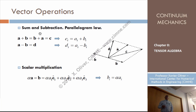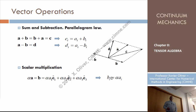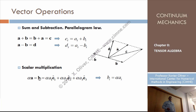Another operation that we can do is, given a vector, multiply it times a scalar. To multiply by a scalar, the rule is that every component of the original vector gets multiplied by that scalar. So the component i of the product is just the component i of the original vector multiplied by the scalar.